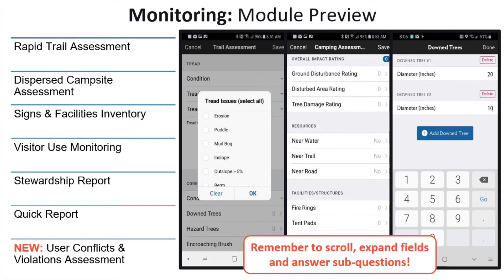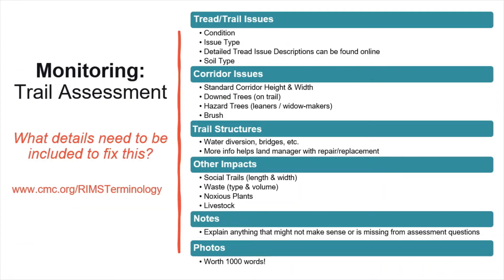Now let's take a closer look at each of the individual modules. There are currently six modules, including a rapid trail assessment, dispersed campsite assessment, signs and facilities inventory, visitor use monitoring, and stewardship report. The quick report is available for any app user, even if they haven't taken the training. As a volunteer, you will have access to all of the modules, but not the quick report. With each module, be sure to scroll, expand the fields, and answer any sub-questions that appear. We strongly encourage you to explore the app on your own to familiarize yourself with the options and check out the RIMS terminology page. The important thing to remember is: what details do I need to include in my report for this issue to be resolved? Both the notes and photos sections are extremely helpful to explain the details and nuances of anything that might not be covered by the assessment questions.